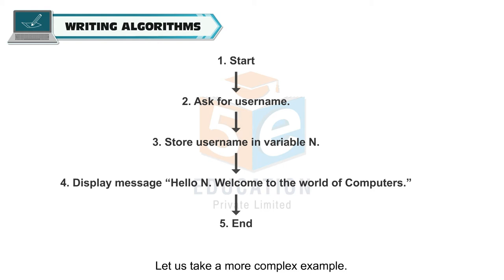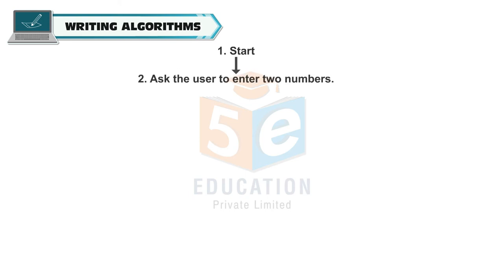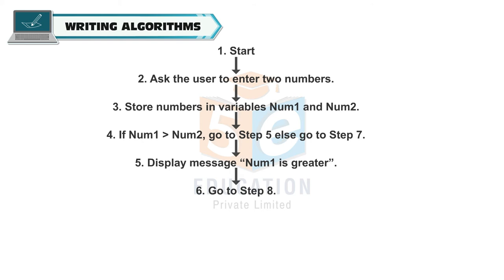Let us take a more complex example. Algorithm 3: write an algorithm to ask the user for two numbers and then tell which number is larger. Start, ask the user to enter two numbers, store numbers in variables num1 and num2. If num1 is greater than num2, go to step 5. Else go to step 7. Display message 'Num1 is greater', go to step 8. Display message 'Num2 is greater'. End.